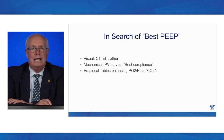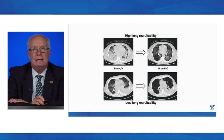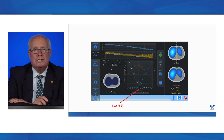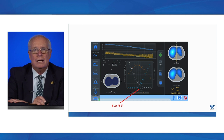How do we search for best PEEP? Options include CT scans, electrical impedance tomography, mechanical approaches, and empirical tables. CT scans show dramatically different recruitable potential: one lung has incredible recruitable potential with applied pressure, while another shows terrible overdistension and little recruitability. The EIT signal can show collapse-and-reopening versus over-distention, and as PEEP increases, there is a sweet spot where recruitment is maximal and over-distension is minimal. EIT is not yet available but could be a very nice tool when it becomes available.